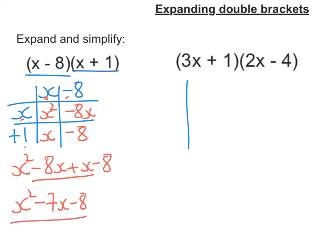Last one here. Let's get the grid out again. So this bracket's going to go here, 3x and 1. And this bracket's going to go along the side, 2x minus 4.